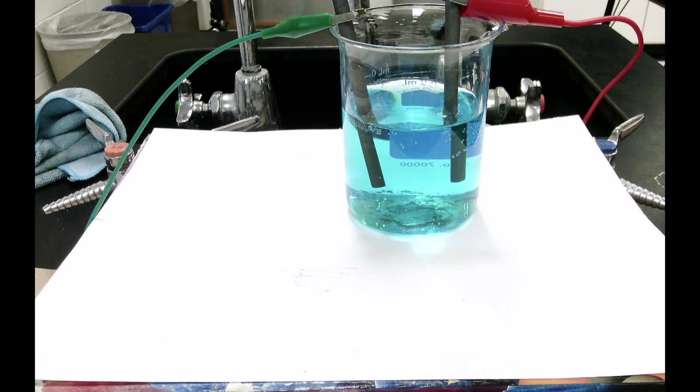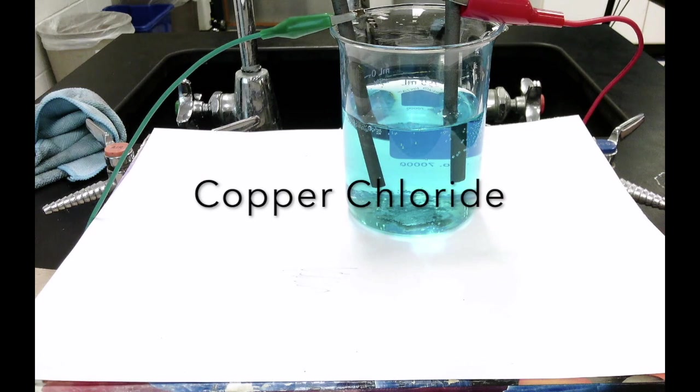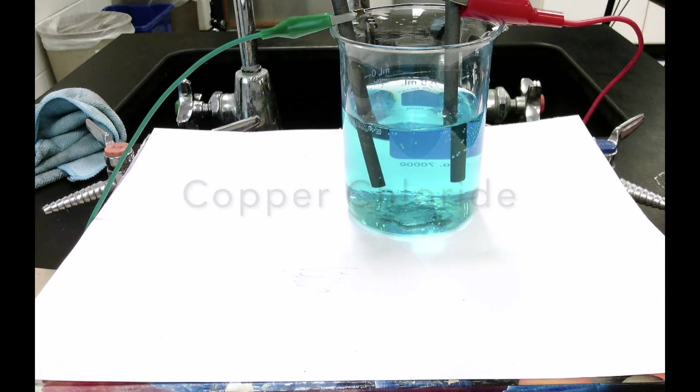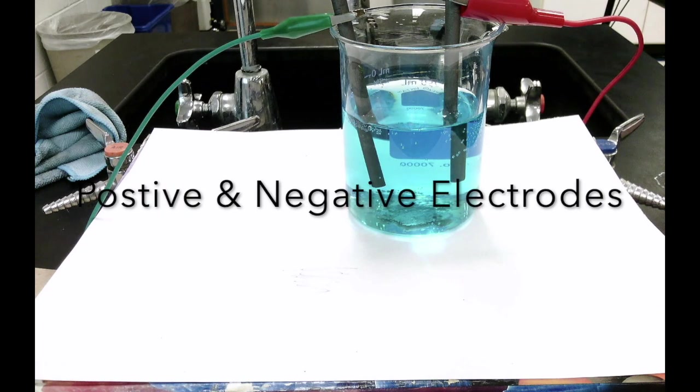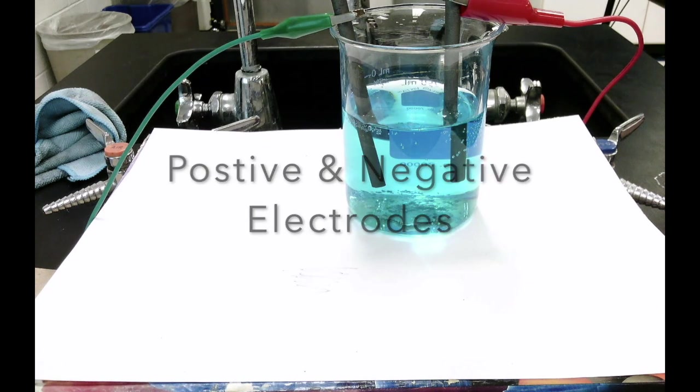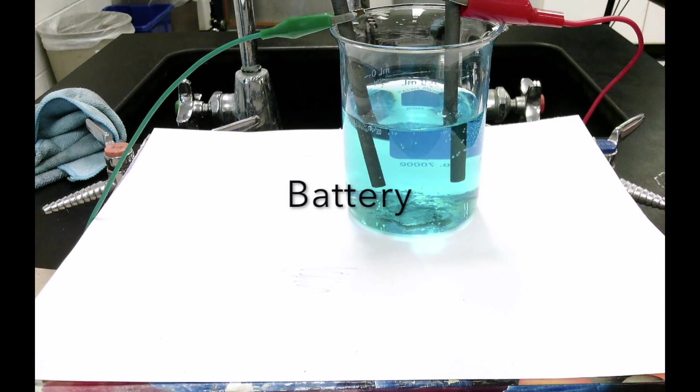So the first thing you want to do on your paper is you want to draw a picture of this apparatus and label the important parts. So the parts that we need to label are going to be the copper chloride solution, the positive electrode and the negative electrode, and the battery. So pause the video and take a moment to label those four things.